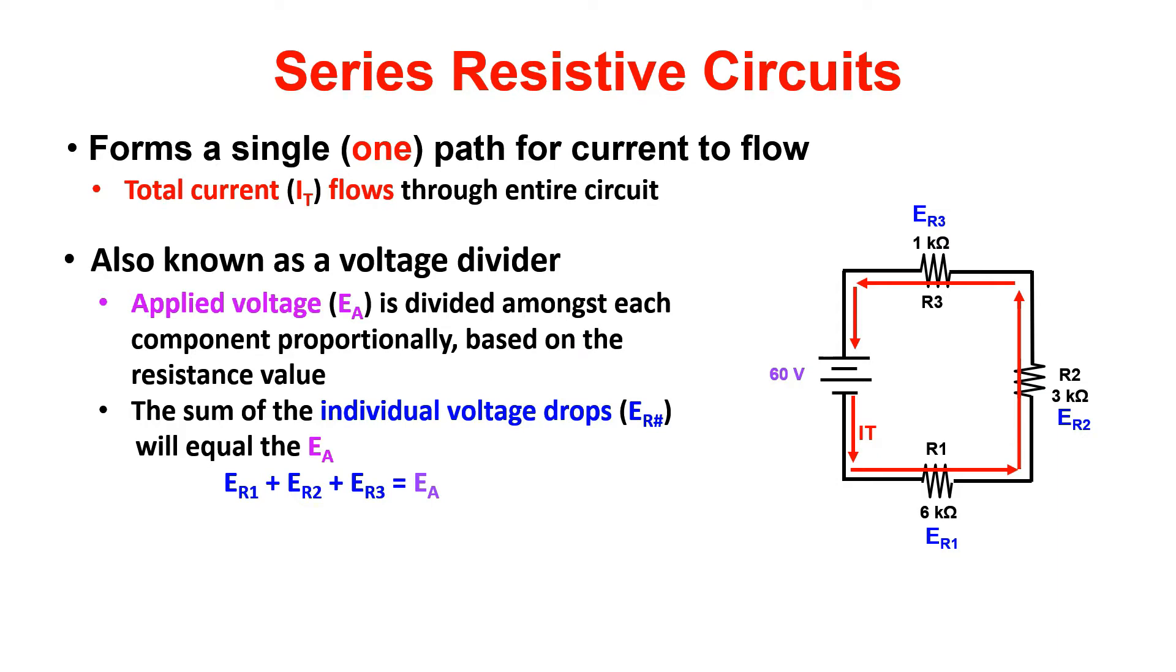Series circuits are also known as voltage dividers. Applied voltage, or EA, is divided amongst each component proportionally based off of the resistance value of each component. The sum of the individual voltage drops will equal your applied voltage.